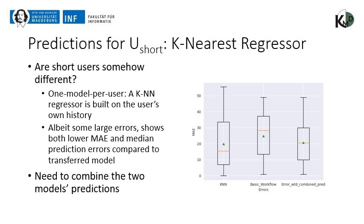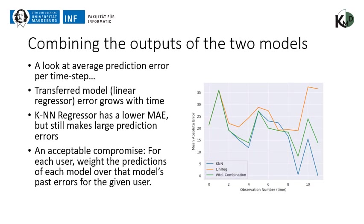For the k-nearest neighbors regressor, one model is built per user using that user's own history. Since we have very few observations and need as many predictions as possible, k is set to two — the two most similar sessions in the user's past are used to predict their development. The KNN regressor shows even larger maximum errors than before, but both the mean and median absolute errors are lower overall, stressing the need for a good comparison between methods.